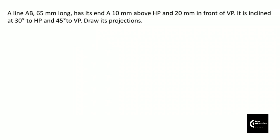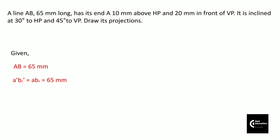First of all we will draw the given data in terms of notations. The actual line AB is 65mm long. A'B1' is the true length in front view and AB2 is the true length in top view, both measuring 65mm. Theta is given as 30 degrees and phi is given as 45 degrees. A' is 10mm above the XY line and point A is 20mm below the XY line.